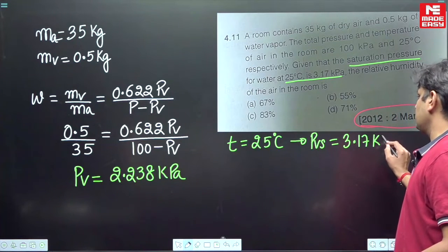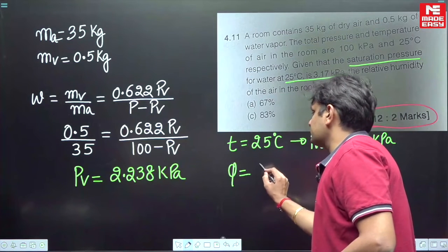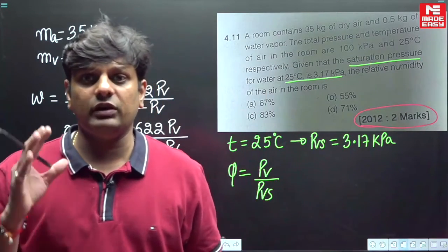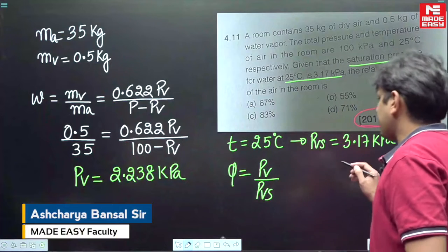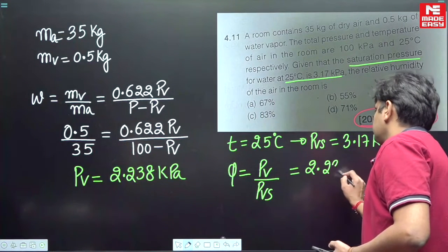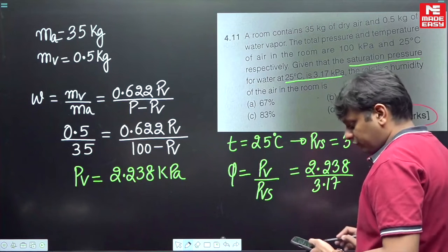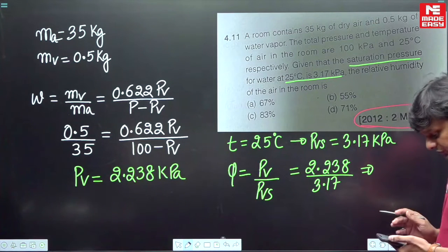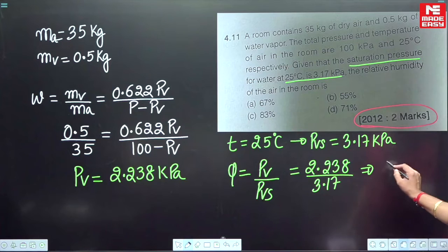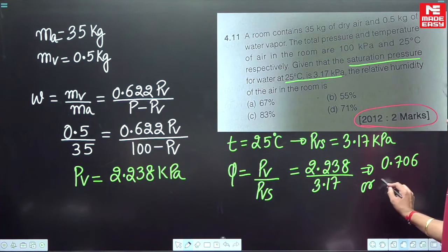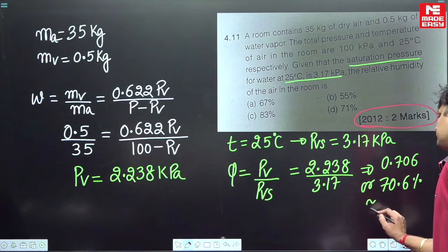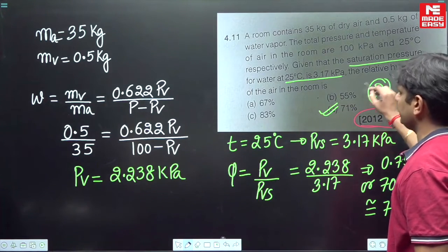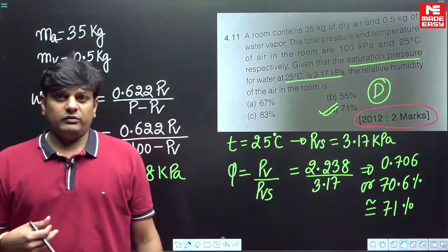Now they are asking for relative humidity (φ), which is defined as the ratio of the mass of water vapor to the mass of water vapor under saturated conditions at a given volume and temperature. So φ = pv / pvs = 2.238 / 3.17. Since we need the answer in percentage, multiply by 100: we get 70.6%, which is approximately 71%. So the answer for this question is option D.